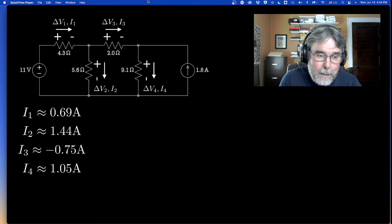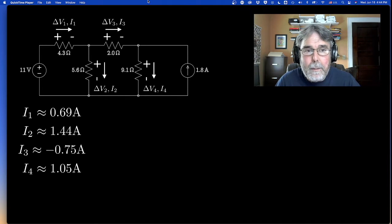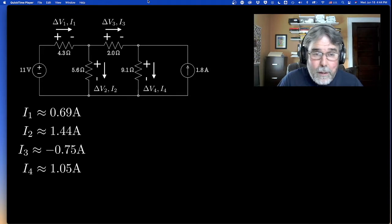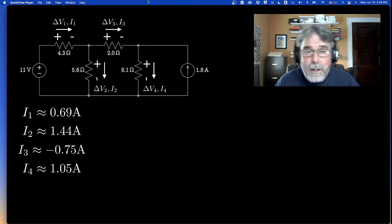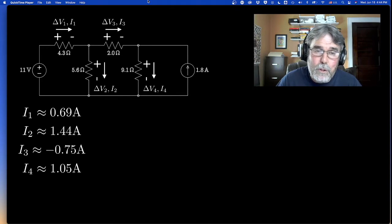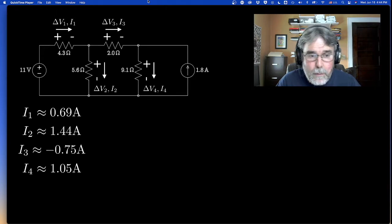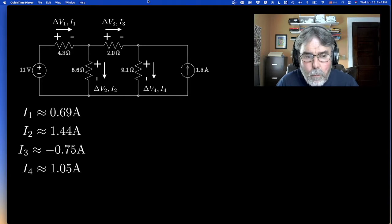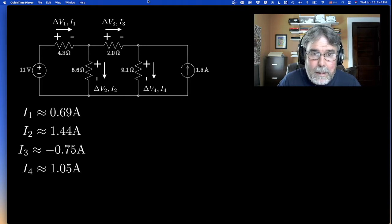The math tells me that the actual direction of the current is 0.75 amps flowing the other way. What that means is the actual direction of the voltage drop is the other way too. The voltage is higher on the right and lower on the left. The current is flowing from high voltage to low voltage to the left. So that's all that means. And then of course we solved for the current in I4 and got 1.05 amps going down.